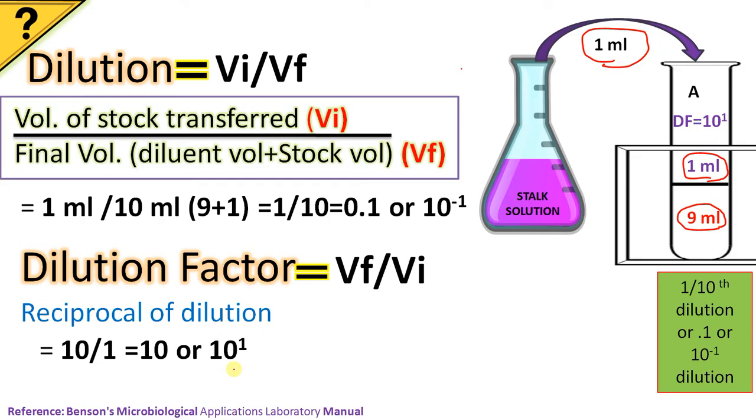It is also represented as 1 is to 10, that means 1 part of the original stock plus 9 parts of the diluent forming 10 parts. So the first point is dilution factor is the reciprocal or inverse of dilution.